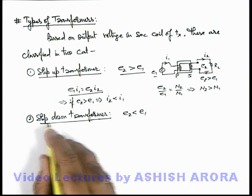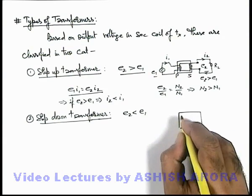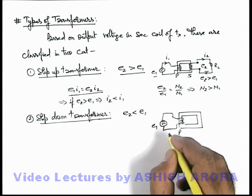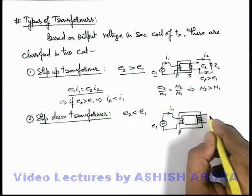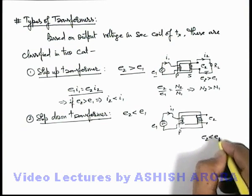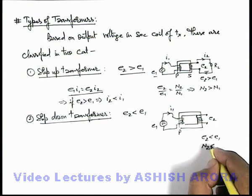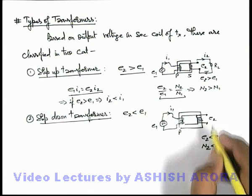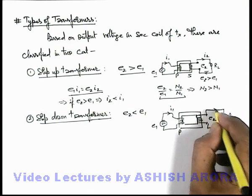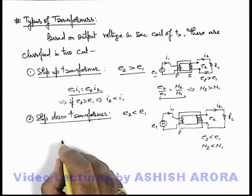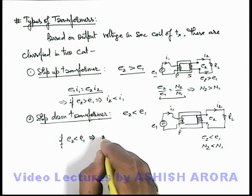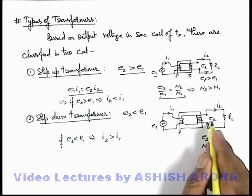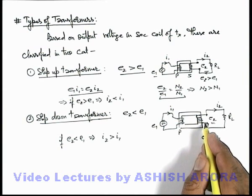As the voltage is stepping down, we call it a step-down transformer. In this situation, the primary coil is connected with EMF e1 and a current i1 is flowing. The voltage e2 in the secondary coil will be less than e1 because the number of turns in the secondary coil is less than the number of turns in the primary coil — as given directly by the transformer equation. If a load resistance is connected and a current i2 flows, then if e2 < e1, the current in the secondary coil i2 will be more than the current in the primary coil i1.